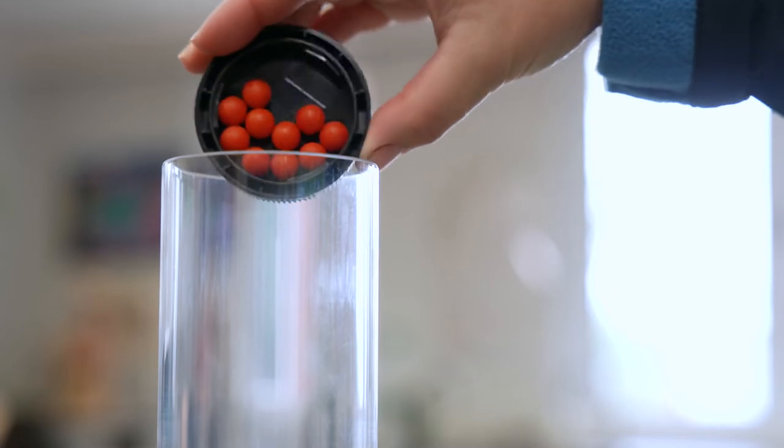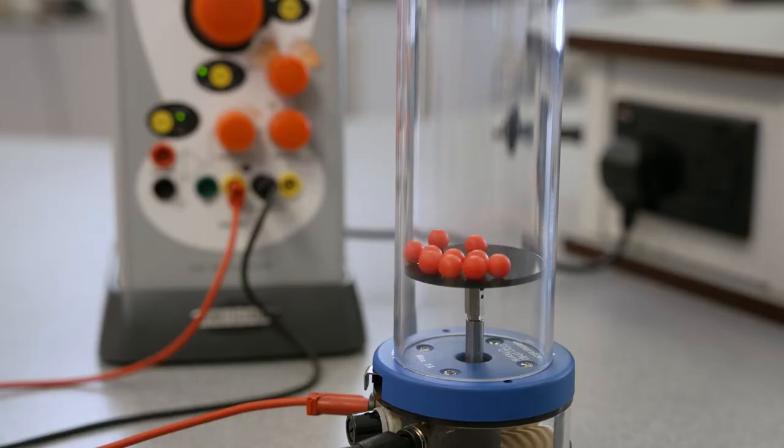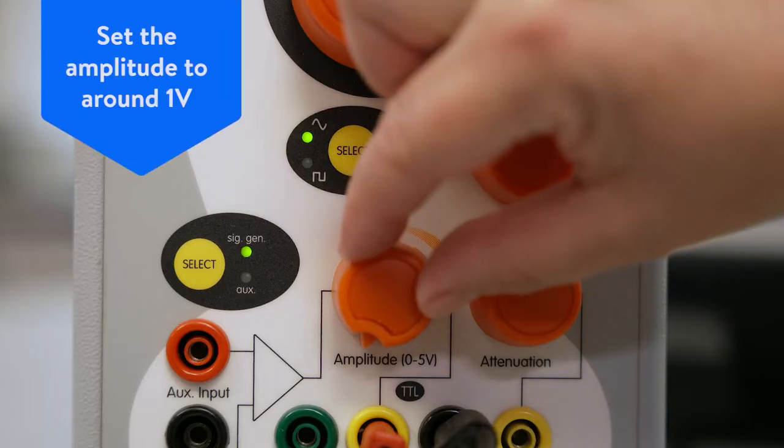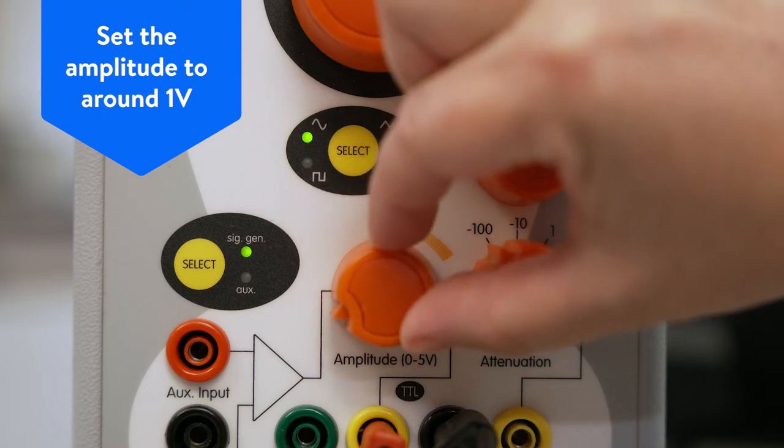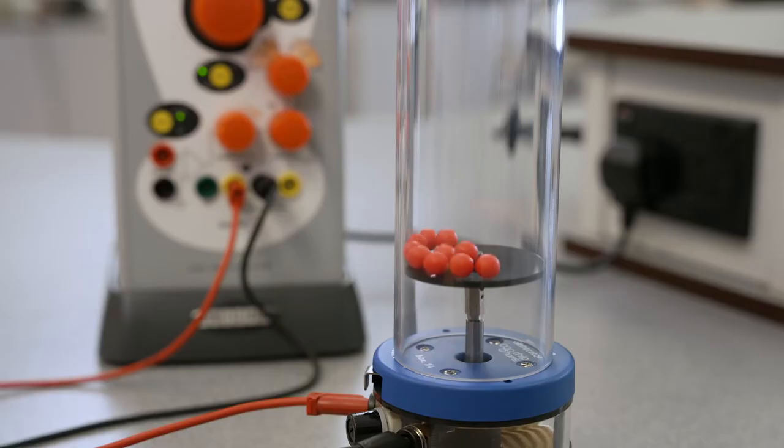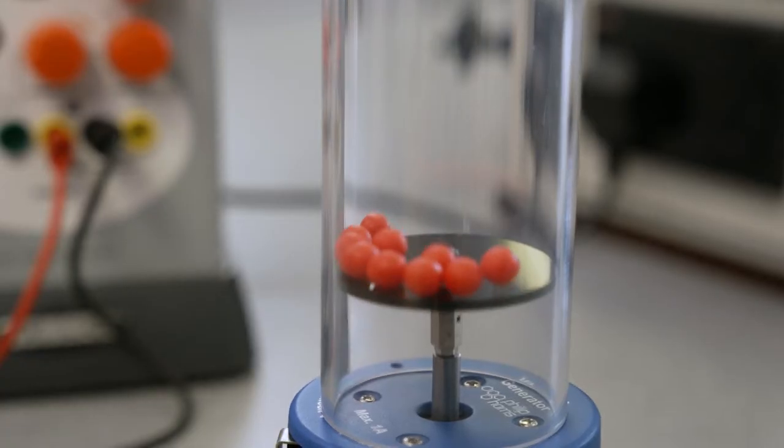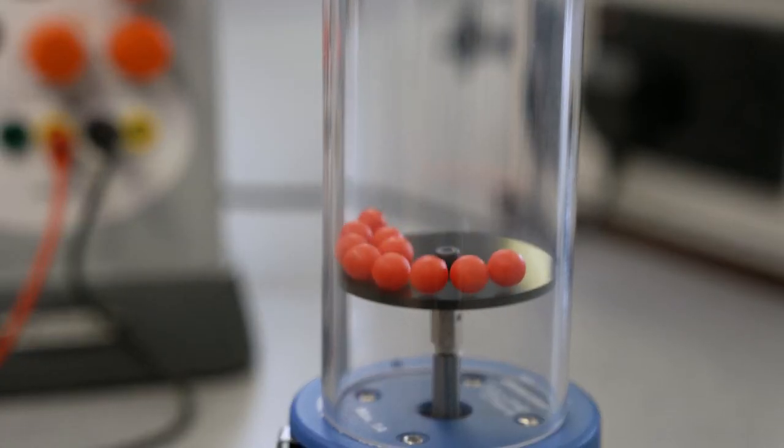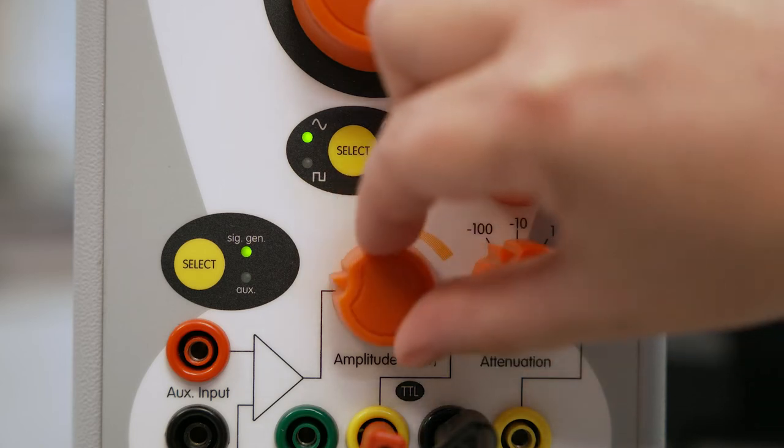Add the colored balls into the tube and slowly adjust the amplitude to approximately one volt. This motion represents molecules in a liquid which are gradually changing places but never becoming very far apart. Raise the amplitude to increase the average kinetic energy of the balls.